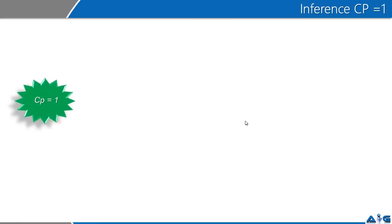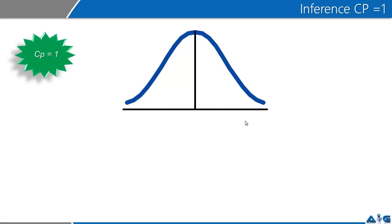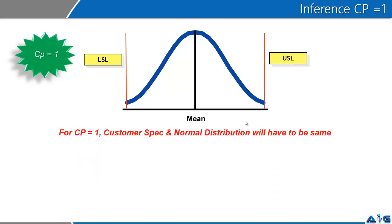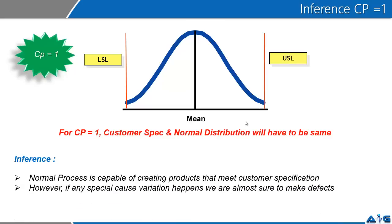There are three typical situations. CP could be equal to one. If you are looking at a business process where CP is equal to one, you are looking at the USL and LSL exactly at the normal distribution — the normal distribution curve and the USL minus LSL are exactly the same. From this, if a business process is working at CP equal to one, under normal conditions the process is capable of creating products that meet customer specification. However, if any special cause variation happens, we are almost sure to make defects.